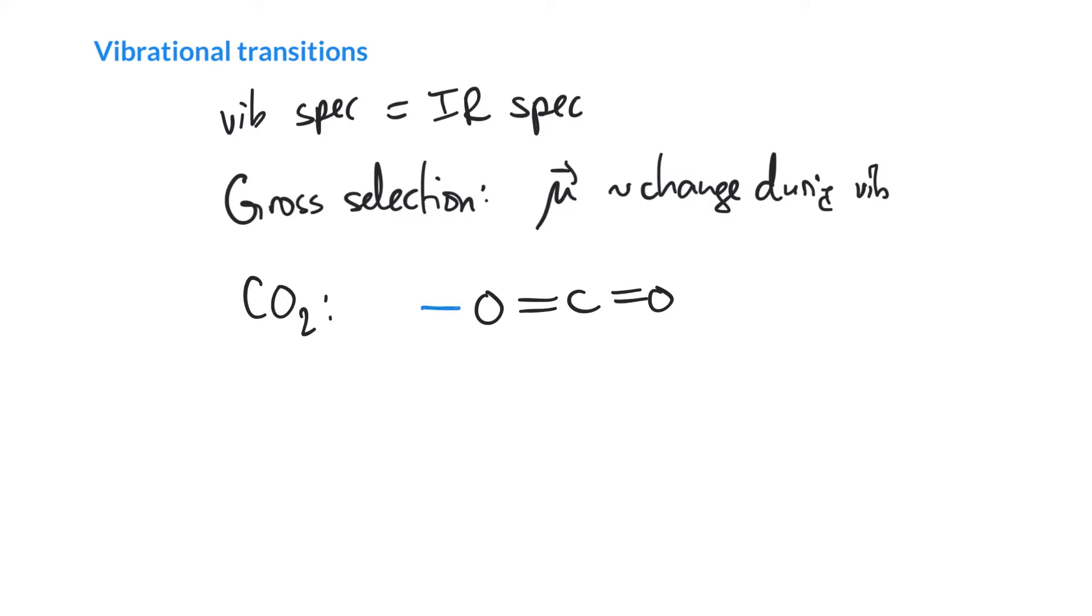We might imagine one of these vibrations where both bonds, the CO bonds, both stretch. This is the symmetric stretch, and the thing about the symmetric stretch is that it is infrared inactive, and so even though the vibration happens, infrared light is not absorbed by the molecule and converted into this vibrational mode. So it has to come from somewhere else, maybe collisions with one CO2 molecule with another.